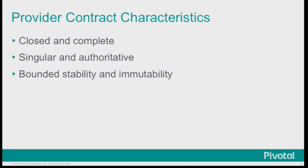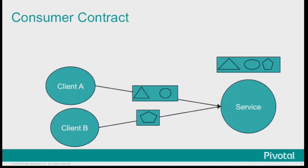If you did that, that's what we currently do today. You're going to have a completely closed and complete definition of your API. It's going to be completely authoritative — whatever you say it is, is the truth, because you're the provider. And it's fairly stable.